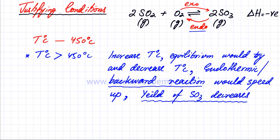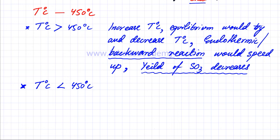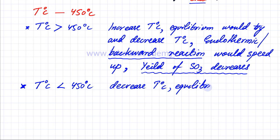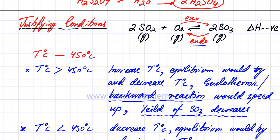Vice versa — what's the reason for not decreasing temperature? If we decrease temperature, then according to Le Chatelier's principle, the equilibrium is going to counter that. So the equilibrium would try to increase temperature, and we know that temperature is increased if the exothermic reaction speeds up — producing more energy — so the forward reaction is going to speed up and be favoured.